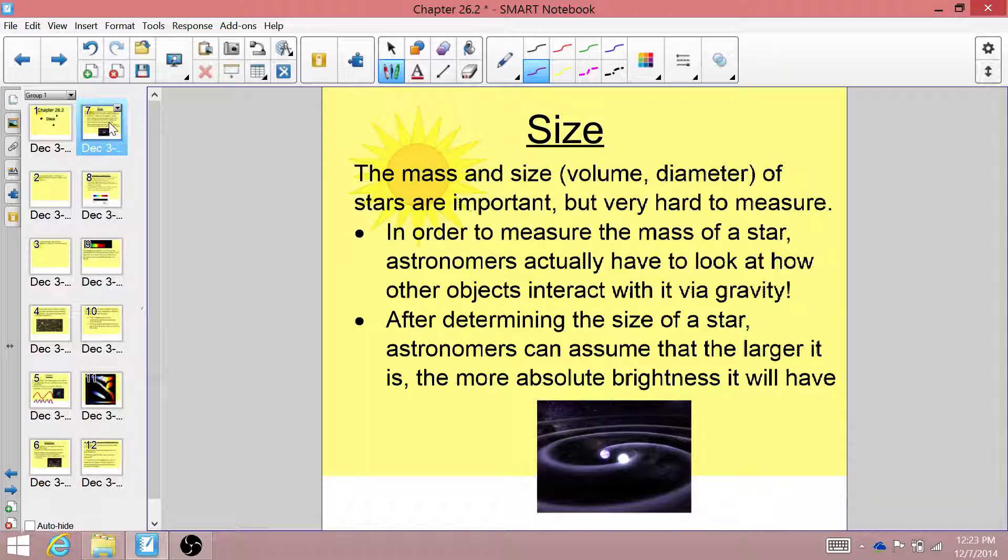In order to measure the mass of a star, astronomers actually have to look at how other objects interact with it. For example, think of Earth. Earth is orbiting around the sun because of gravity. The gravity of the sun's mass pulls the mass of the earth toward it.